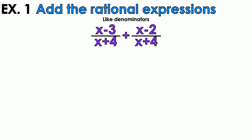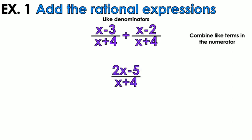Add the rational expressions. First, you already have like denominators, so your life is easy. All you have to do is combine like terms in the numerator. We're going to get x plus x which is 2x, and negative 3 plus negative 2 which is negative 5. Leave the denominator alone because you already have like denominators.